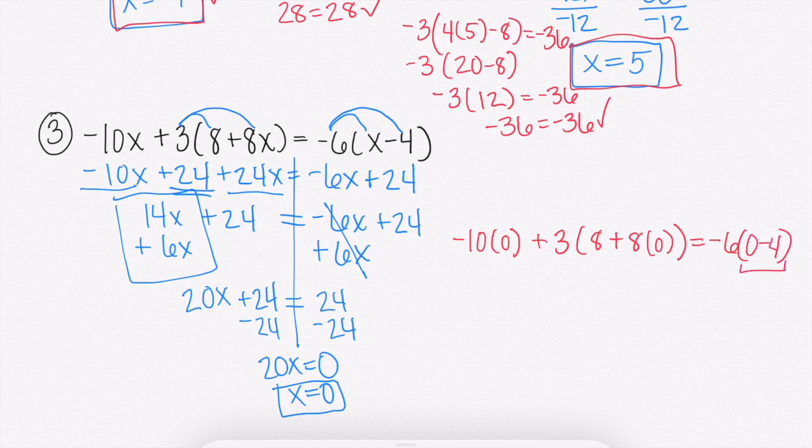So this is obviously, 0 minus 4 is going to get me negative 4 times negative 6, which would get me a positive 24. Left side's a little trickier, I think. We'll see. So we have negative 10 times 0, which is just going to be 0.